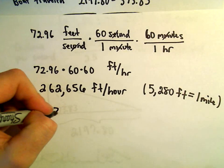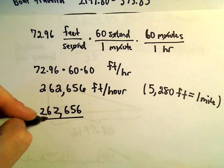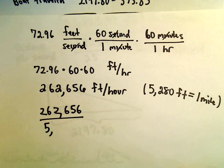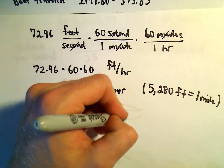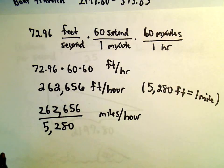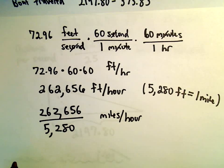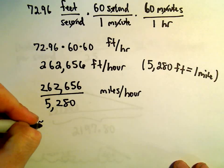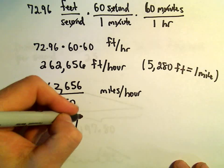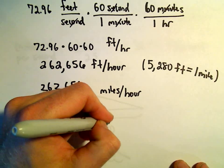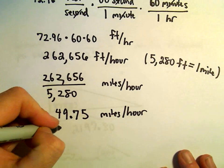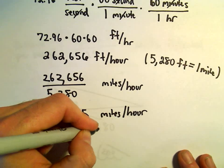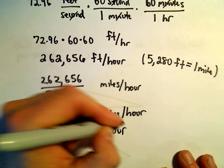262,656, if we divide that by 5,280, I'm getting this to be roughly equal to 49.75 miles per hour. And we've been rounding a lot, so let's even just round up. So this boat is roughly moving at 50 miles per hour, moving very fast.